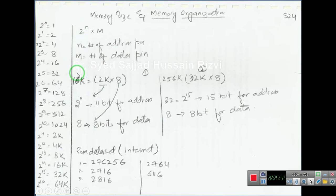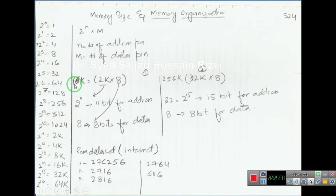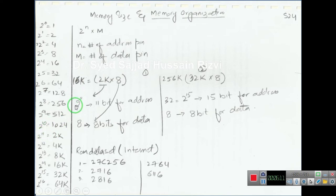Now let's assume we have a memory whose size is 16K. This 16K size may have the organization of 2K by 8 — that is, 8 times 2K equals 16K. So 16K can be organized as 2K by 8. Since 2K means 2 raised to the power 11, this means there are 11 address bits. So this memory has 11 bits for address.